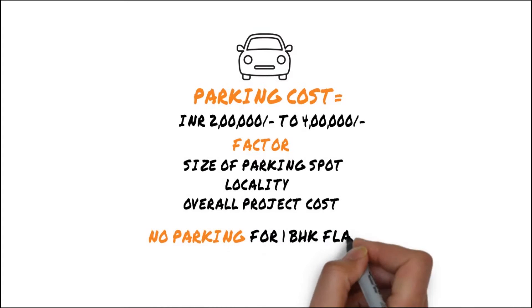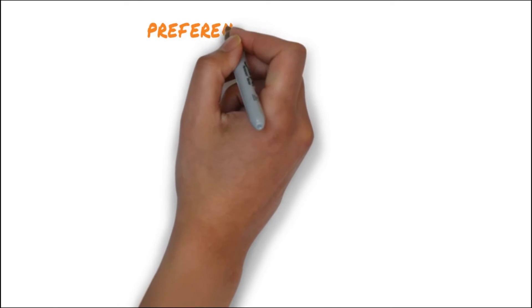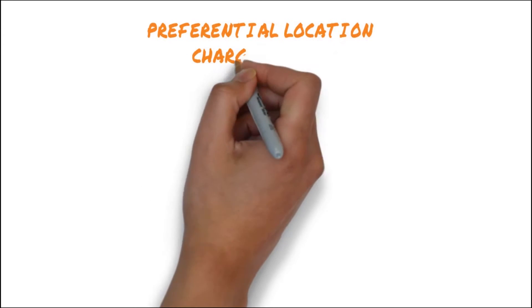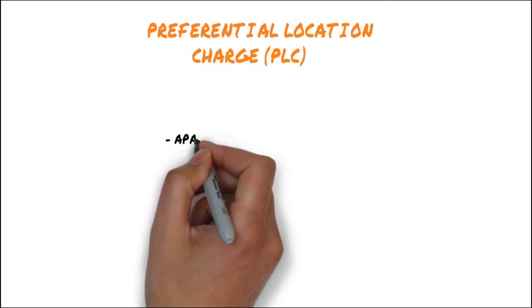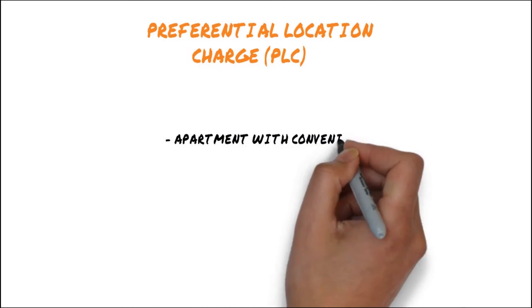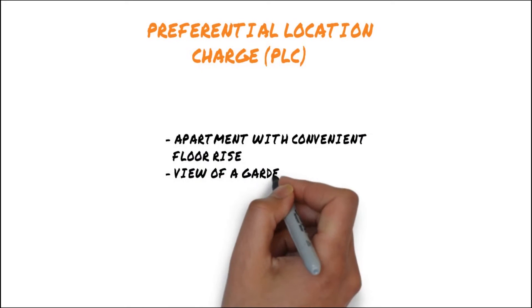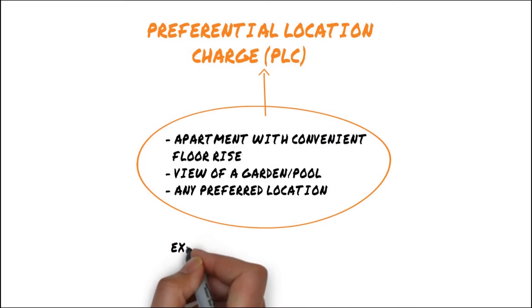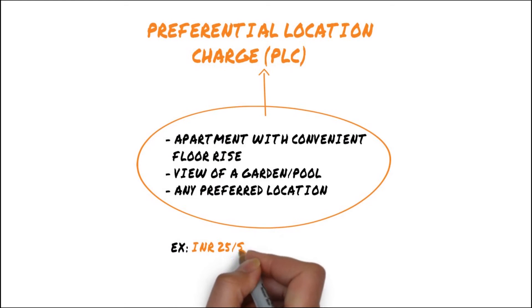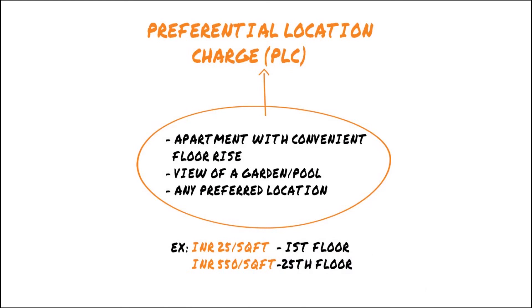Some builders don't provide parking space for 1BHK apartments. Another addition is the preferential location charge PLC, which is generally levied on apartments in prime locations within the community. If you want an apartment with a convenient floor rise, a view of the garden or pool, or in any generally preferred location, this charge will apply. For example, some projects charge up to 25 rupees per square feet for the first floor to almost 550 rupees per square feet for the 24th floor.